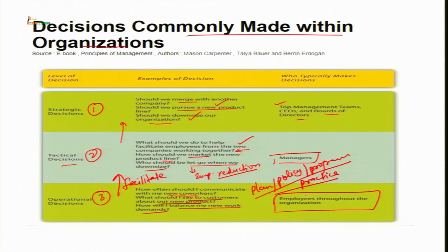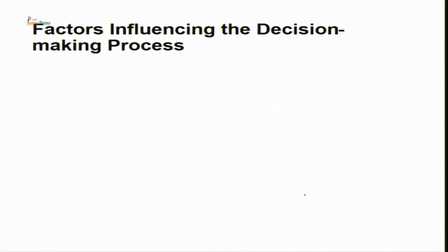By now you are well aware of different styles of decision making and different types of decisions taken in organizations. Now let us look at factors influencing the decision making process. There are two factors: internal factors and external factors. Internal policies and practices become the strengths and weaknesses of an organization and prompt it to take certain decisions to cope with competition outside. External factors pose opportunities and threats and push organizations to take decisions for better competitive advantage.